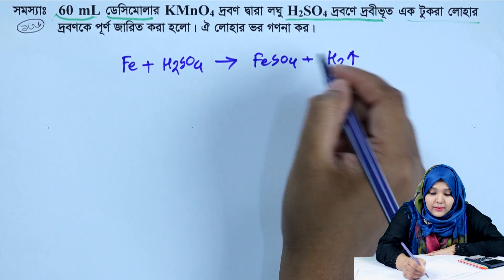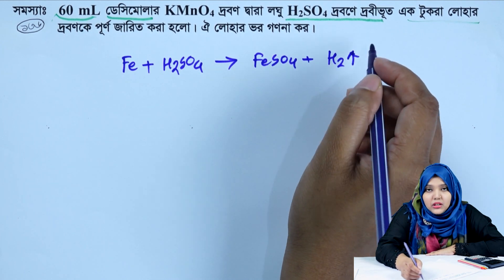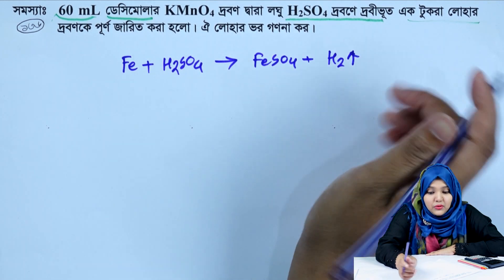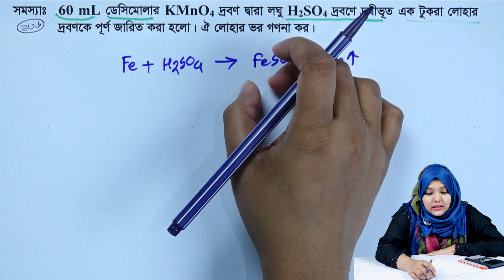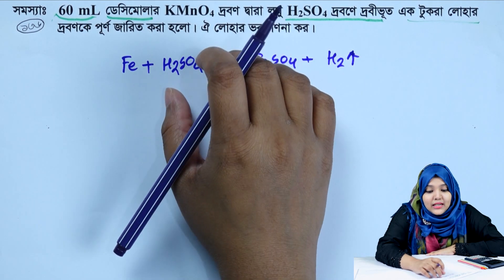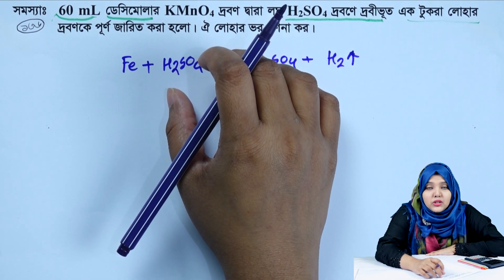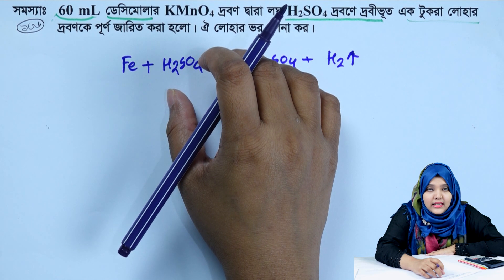The hydrogen gas, being a gas, escapes from the solution. The ferrosulfate remains in the solution along with the remaining dilute sulfuric acid.